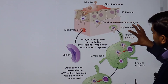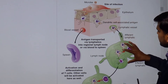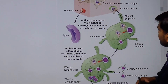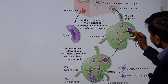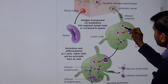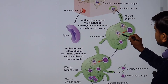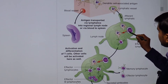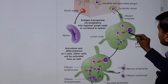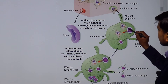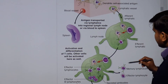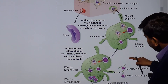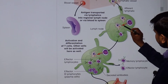Tissue will drain through the lymphatics towards the lymph node. In the lymph node, you can see the antigen presenting cell, which will be presenting antigen to the T lymphocyte in the paracortex region. Once this presentation occurs,